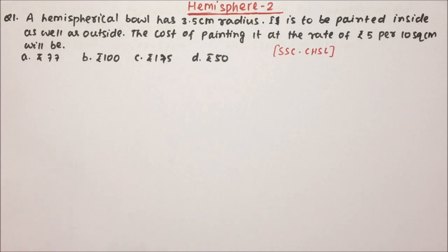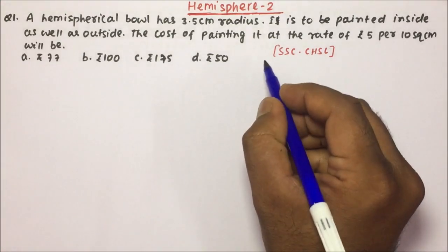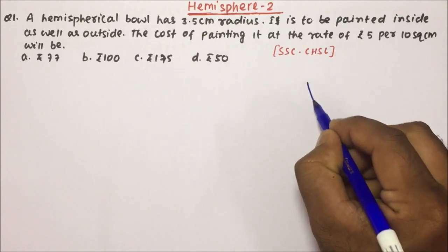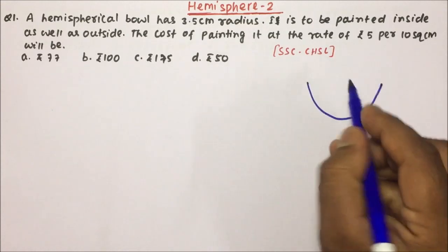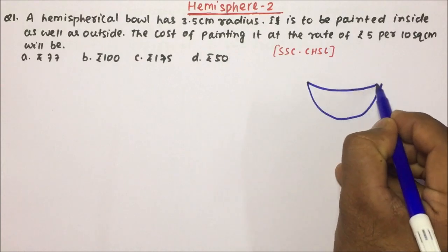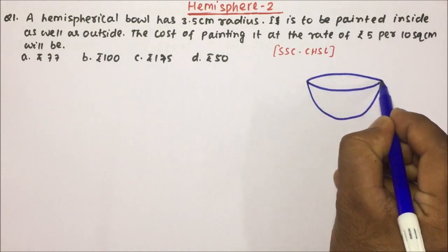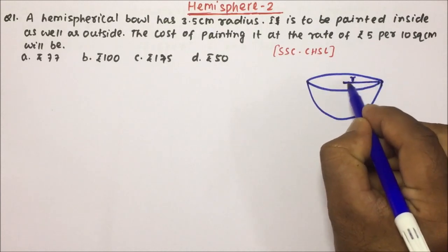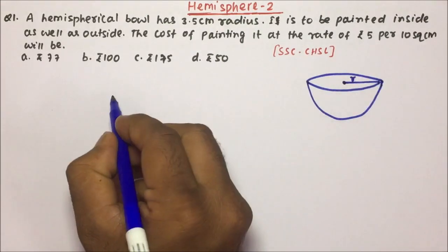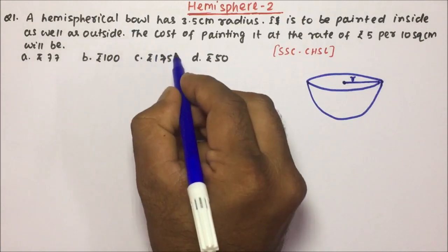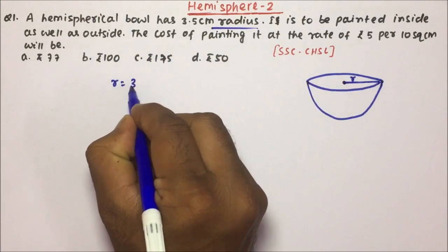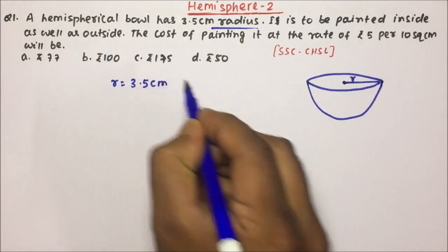The question is: a hemispherical bowl has a 3.5 centimeter radius. So friends, a hemispherical bowl — if you see a hemisphere, it looks something like this. This is your hemisphere, and if we talk about the radius, this part here is the radius. So the radius of the hemispherical bowl is given as 3.5 centimeters.